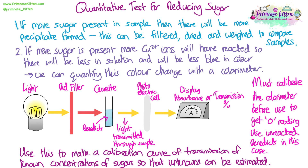Before we test an unknown sample, we can make up a series of concentrations of glucose, or whatever sugar we are testing. We then react each one of those with Benedict's, and put a sample of each known concentration through the colorimeter to get a transmission or absorbance reading. We can then make a graph with concentration of glucose on the x-axis and absorbance or transmission on the y-axis, and draw a line of best fit.